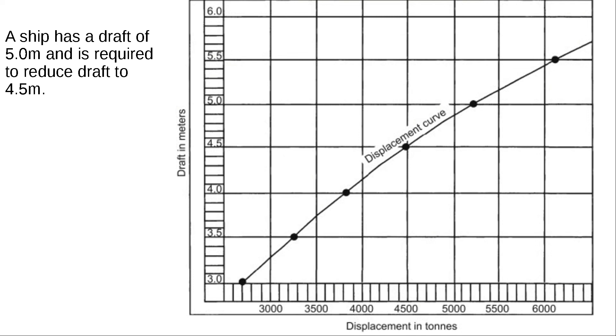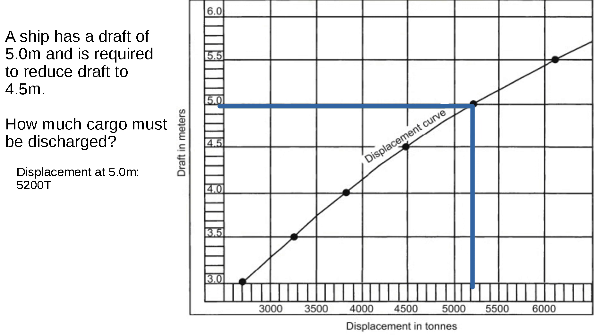So once again, using our displacement curves to figure out how much cargo must be discharged. At our 5 meter draft, what does our displacement correspond to? 5,200 tons.